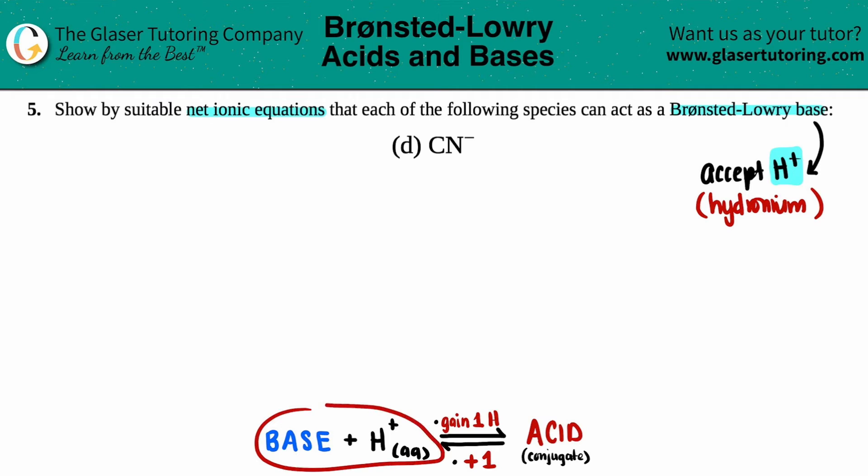And we write that in terms of a net ionic equation by having the base and the H⁺ on one side. That way they can come together and the base will accept. So we got CN⁻ plus H⁺.